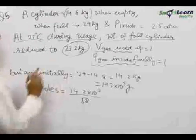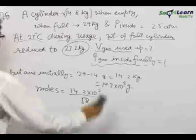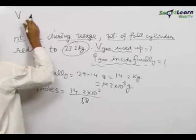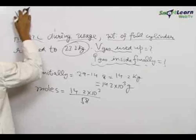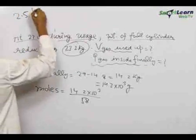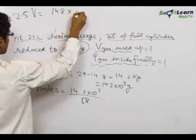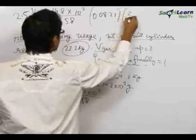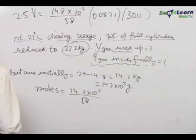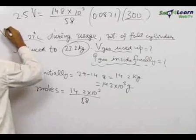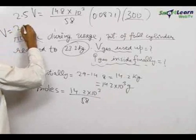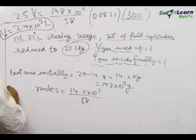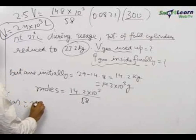Now we find the volume of the cylinder, which equals the volume of butane present initially, since the whole cylinder was full with butane. Using PV = NRT: pressure equals 2.5 atm initially, N equals 14.8 into 10³ divided by 58 moles, gas constant is 0.0821, and initial temperature is 27°C converted to 300 Kelvin. Solving gives the initial volume of the cylinder equal to 2.4 into 10³ liters, which is also 2.4 cubic meters.